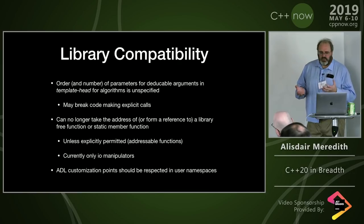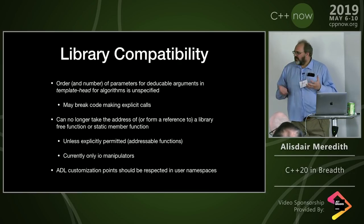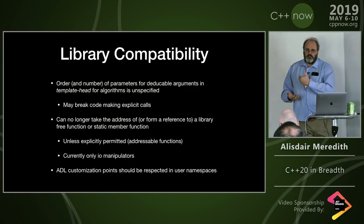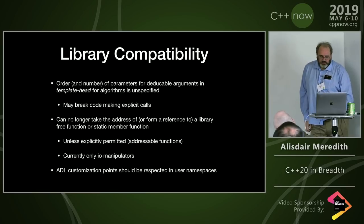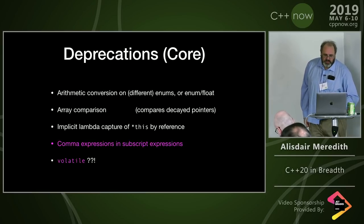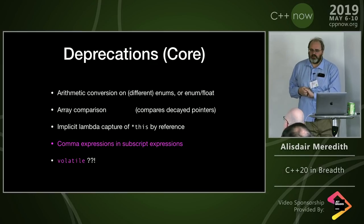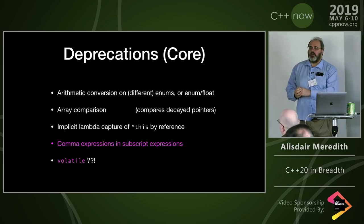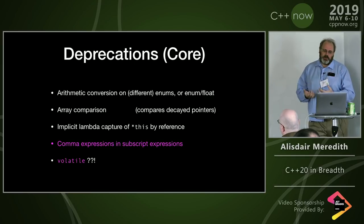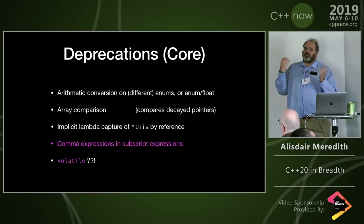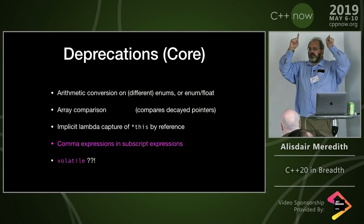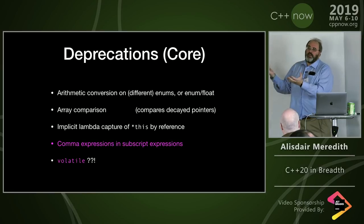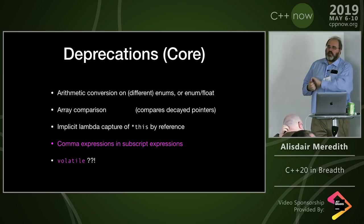Most of these library compatibility changes are subtle, but they unlock our ability to develop libraries more maintainably in the future. We're also deprecating things that are currently well-defined but where you might start getting compiler warnings. For example, arithmetic conversions between two different enum types — doing e1 + e2 — is now deprecated. The promotion to integer for such arithmetic is not stopped today, but you may get deprecation warnings.